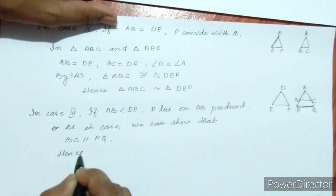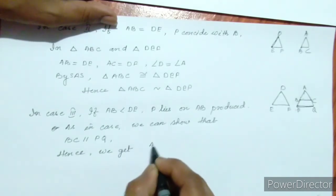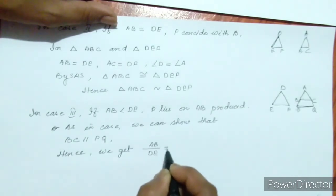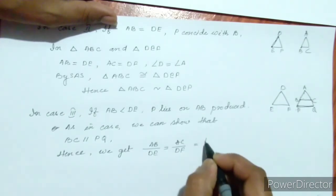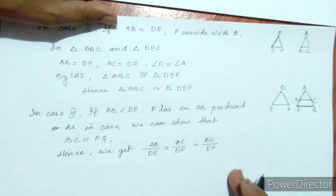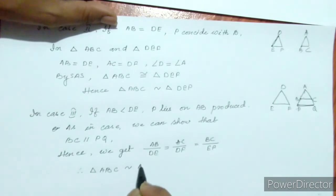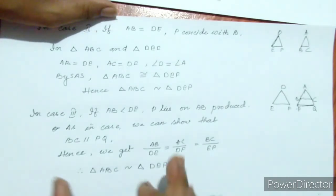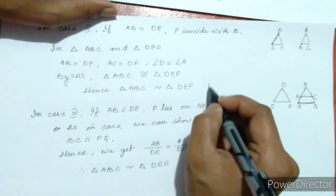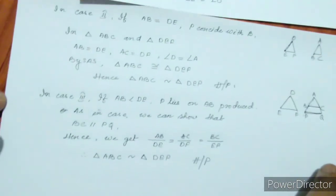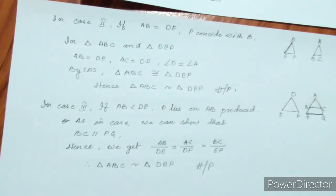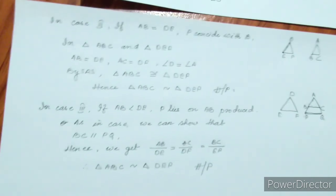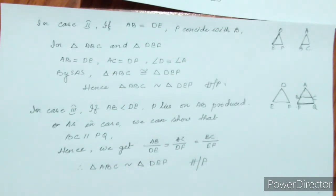Hence we get AB by DE equal to AC by DF. Therefore triangle ABC is similar to triangle DEF. This completes the proof of Theorem 7.4.